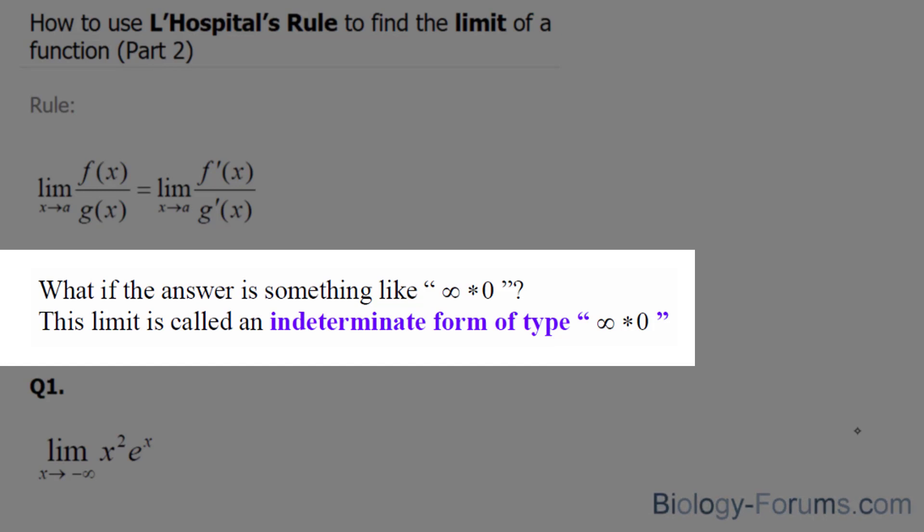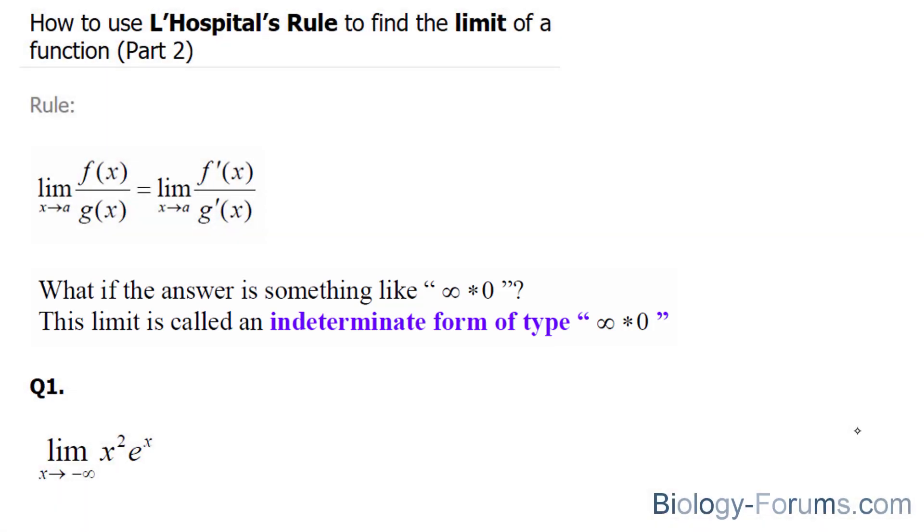This limit is called an indeterminate form of type infinity times zero. So let's tackle two examples. Let's start with question number one.